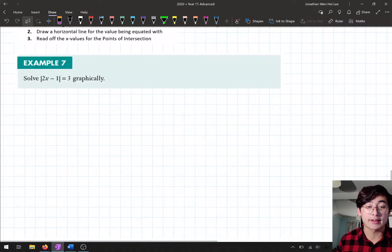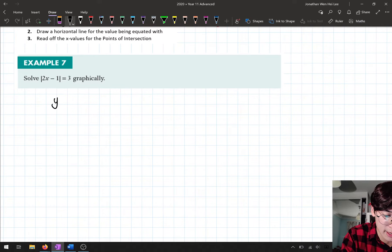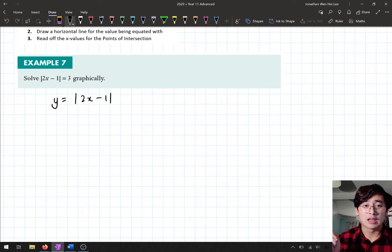So we want to solve |2x - 1| = 3 graphically. Now last lesson, we had a look at graphing absolute value functions. So what we're going to be graphing here is y = |2x - 1|. Last lesson, what we did was we did two steps.